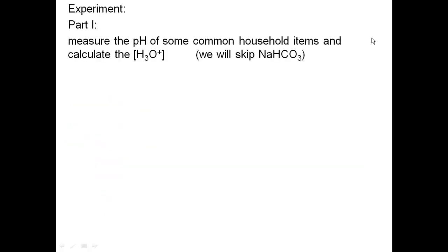So, part one of this experiment is going to be where we just measure the pH of some common household items, and calculate the hydronium ion from that. So, we're going to measure the pH with an instrument, then calculate from pH, go to hydronium ion. We will skip the sodium bicarbonate one. We're going to do the acid components, which means that when we calibrate the pH meter, we're only going to calibrate the pH side, which means a buffer 4 and a buffer 7 when we calibrate the machine.